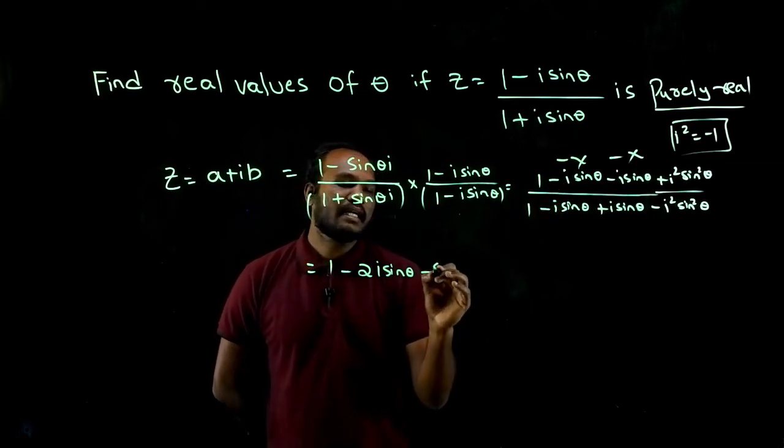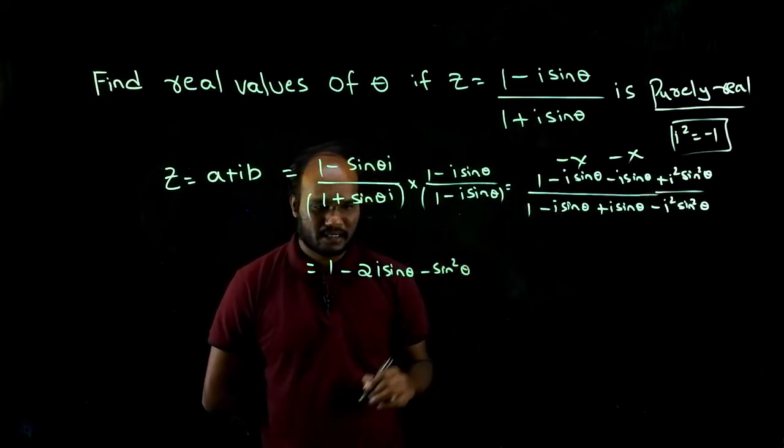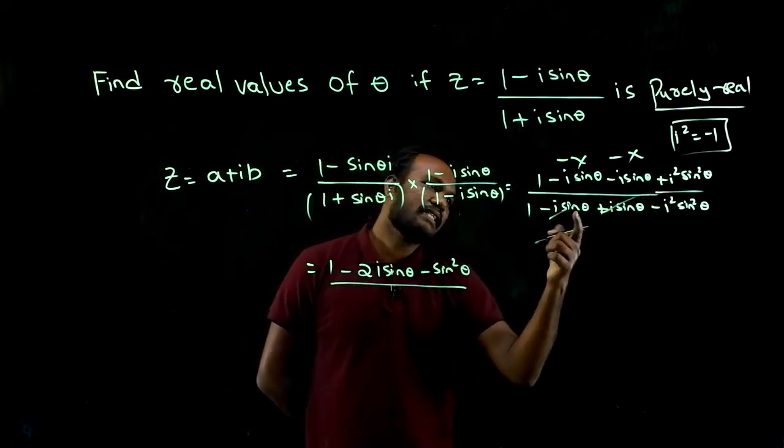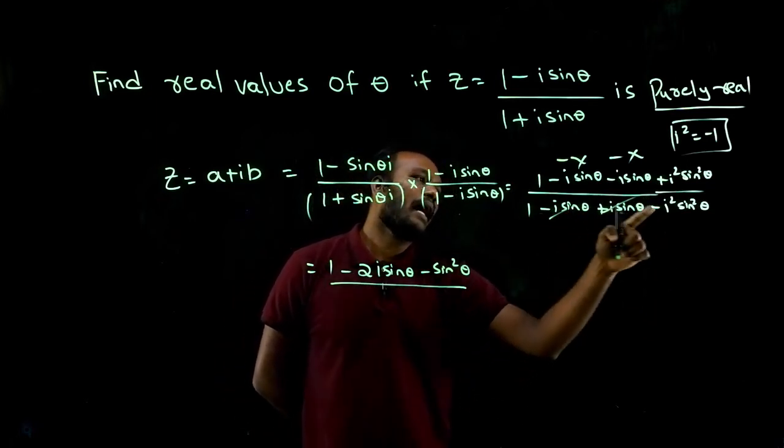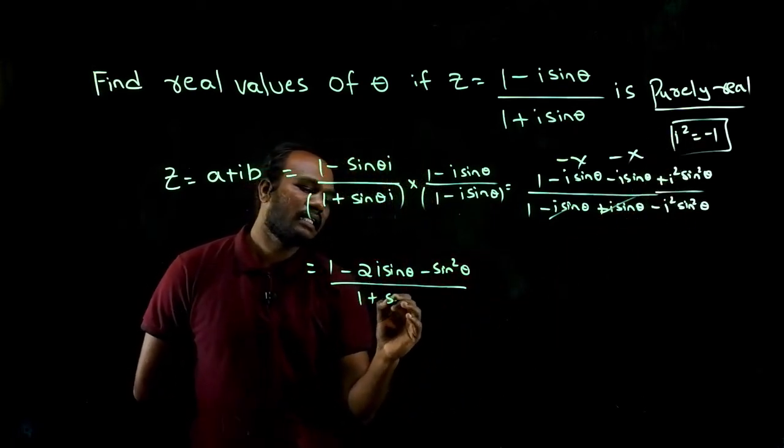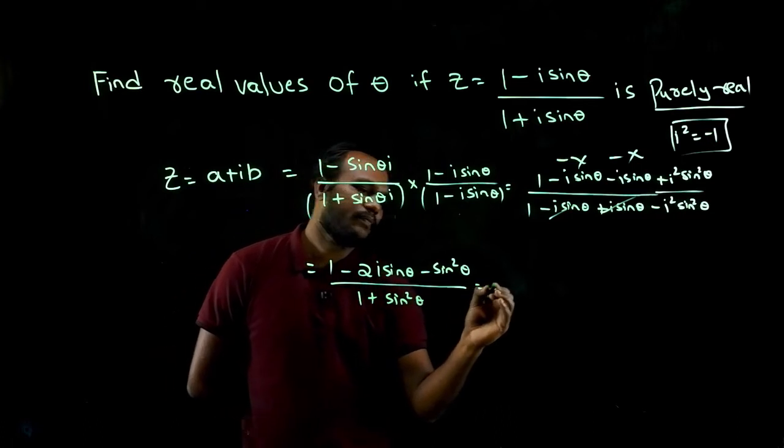In the denominator, this and this get cancelled because minus times plus get cancelled. So one, i square value is minus one, minus into minus is plus. So one plus sine square theta.